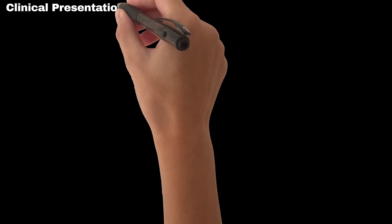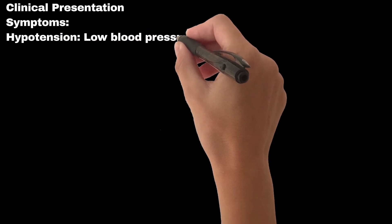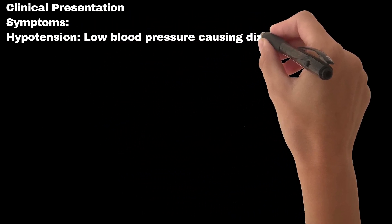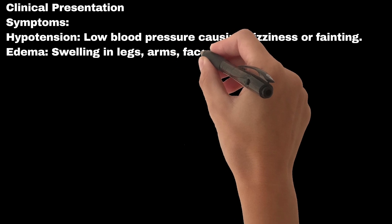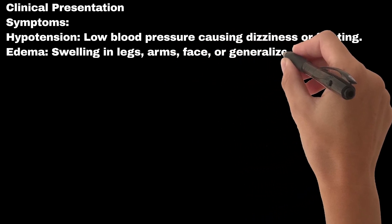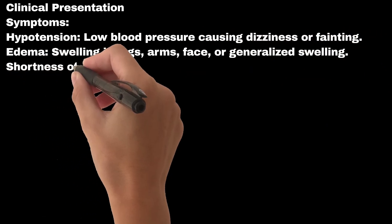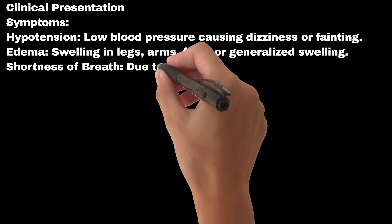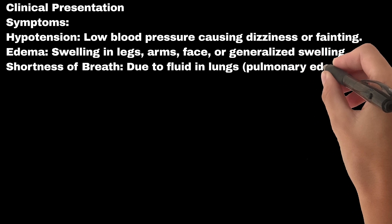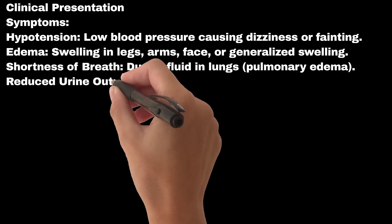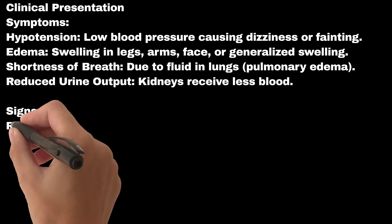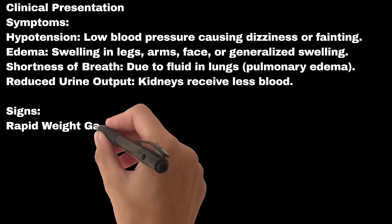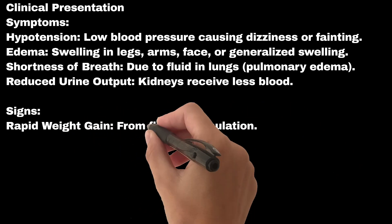The clinical presentation of CLS includes symptoms such as hypotension — low blood pressure causing dizziness or fainting — edema with swelling in legs, arms, face, or generalized swelling, shortness of breath due to fluid in the lungs (pulmonary edema), and reduced urine output as the kidneys receive less blood. Signs include rapid weight gain from fluid accumulation.